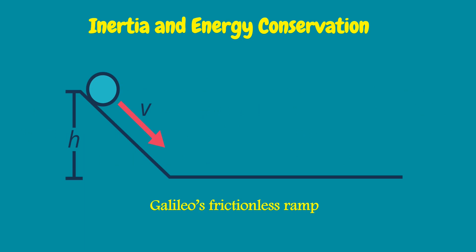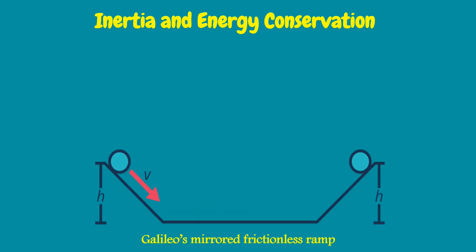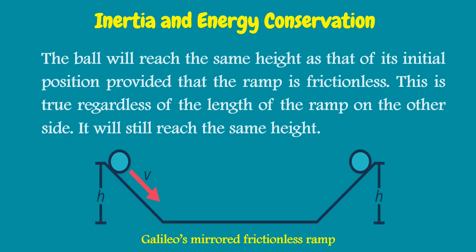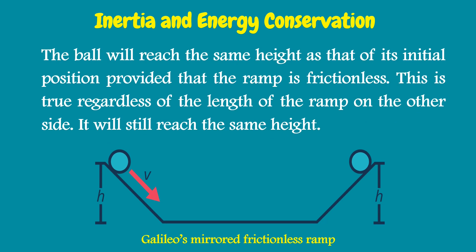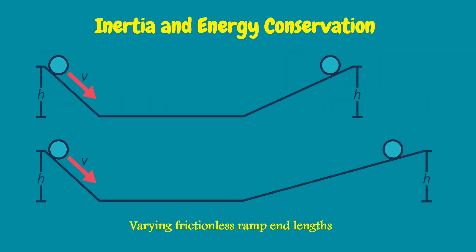This is the illustration of Galileo's frictionless ramp, showing the height of the ramp and the direction of the object's motion. Based on Galileo's mirrored frictionless ramp, the ball will reach the same height as its initial position, provided the ramp is frictionless. This is true regardless of the length of the ramp on the other side — it will still reach the same height.